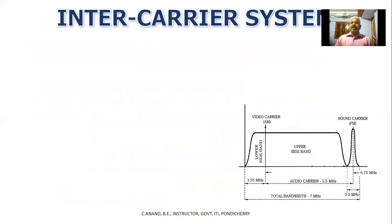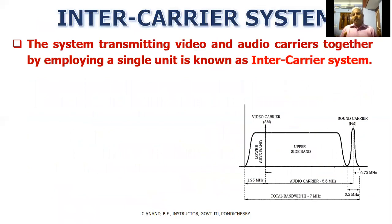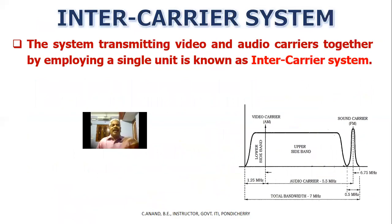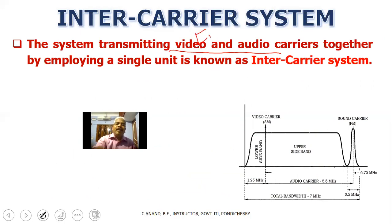The intercarrier system: transmitting video and audio together by employing a single unit is known as the intercarrier system. In this system, we transmit two signals — video using AM (amplitude modulation) and audio using FM (frequency modulation).